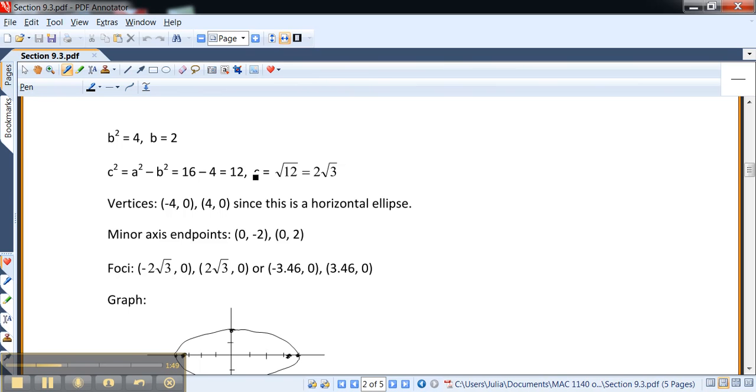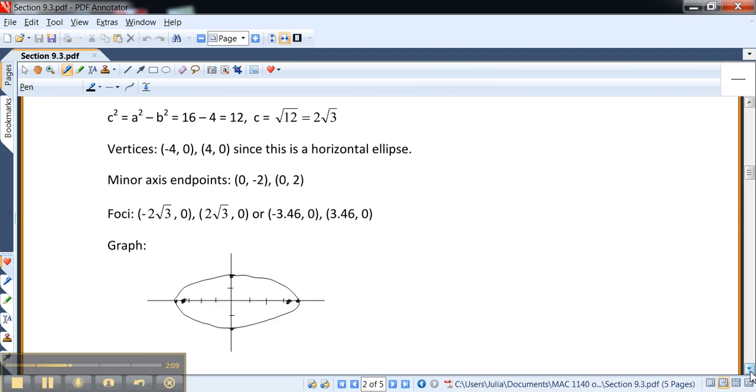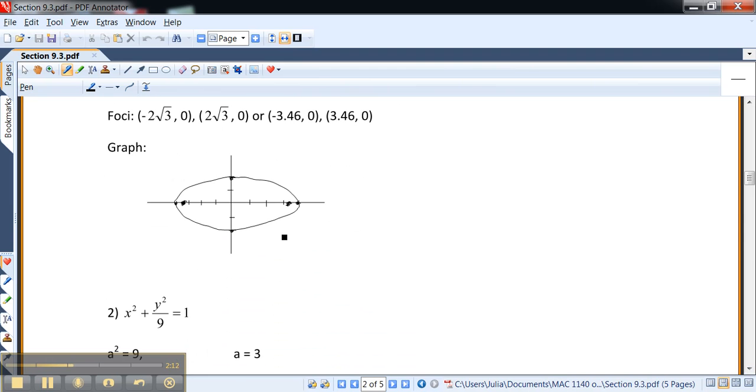Now c² happens to be 12, which means that we can take 12 as 4 times 3, and that becomes 2√3. We can actually turn that into a decimal, that way we'll be able to graph it. But I'm sure for the actual answers, we're going to use the radicals. So here is how the ellipse would look.